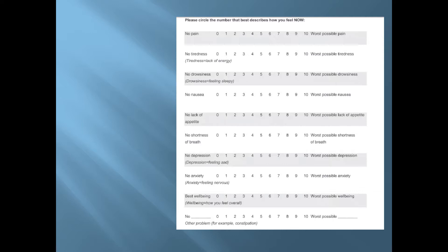Always in an ESAS, 0 is great and 10 is bad. So for lack of appetite, 0 means no lack of appetite and 10 is terrible. So 0 is always the best and 10 is the bad one.